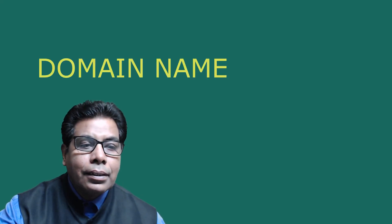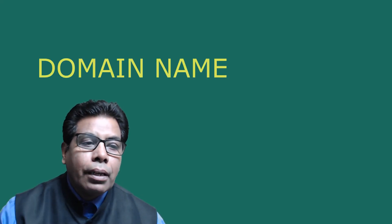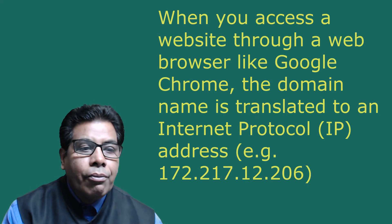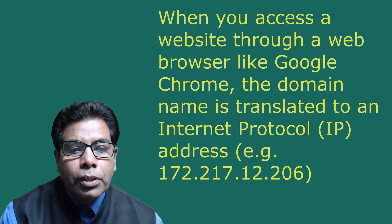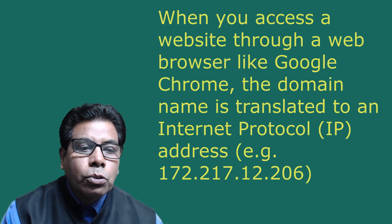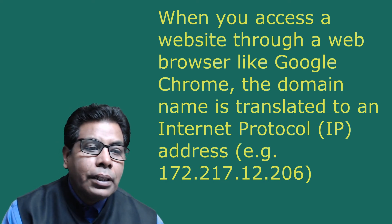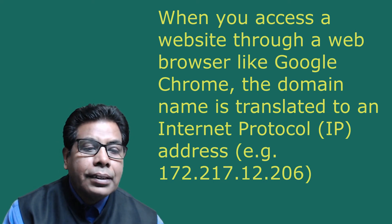So this way the internet and World Wide Web are different — the World Wide Web is a part of the internet. The domain name, for example google.com, is used to identify the location of a website on the web server. When you access a website through a web browser like Google Chrome, the domain name is translated to an internet protocol, that is IP address.